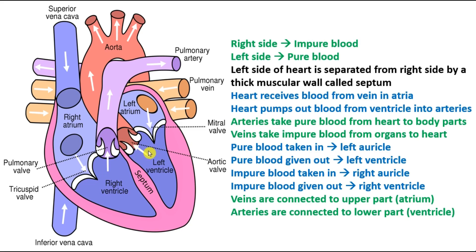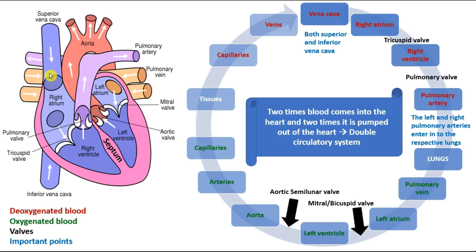Please remember these points for the next video, where we will use them to see through which artery or vein blood flows at each stage. As a preview, there are two venae cavae — the superior vena cava and the inferior vena cava. These are veins, and both venae cavae empty into the right atrium.